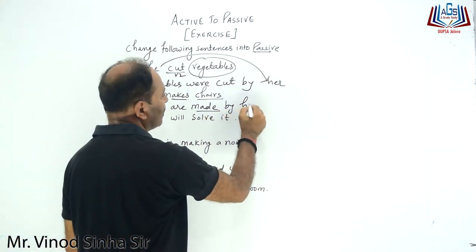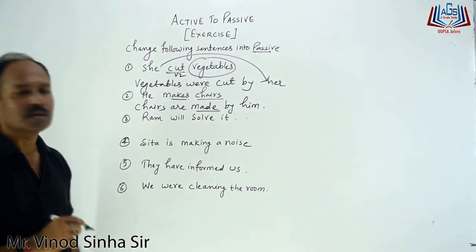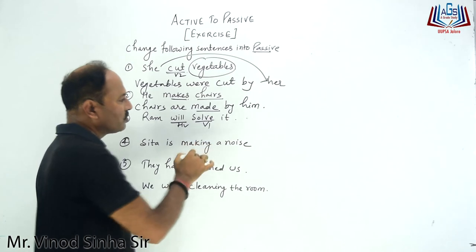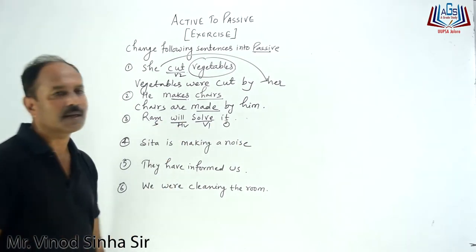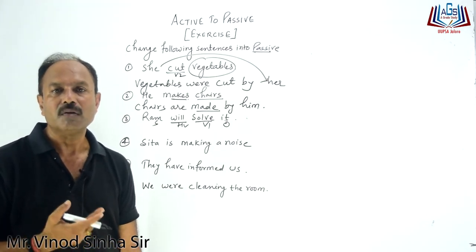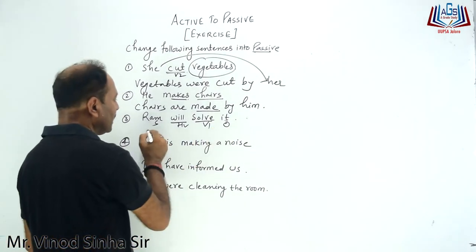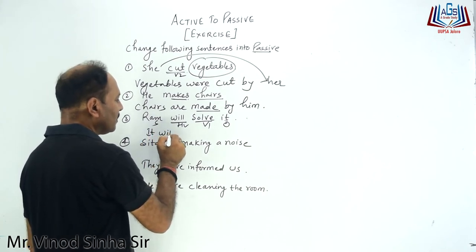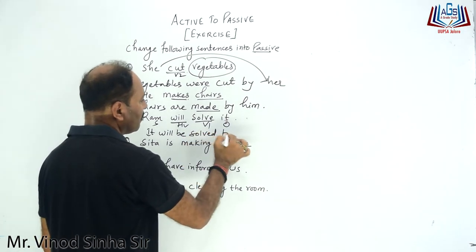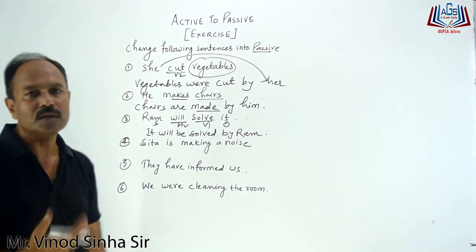We have to see 'by' — so 'he' here will become 'him'. Now: 'Ram will solve it' — future simple. This is very simple. This is your helping verb and this is your first form. This is your object. For future simple, you use 'will be' or 'shall be' plus third form. So it will be: 'It will be solved by Ram.'